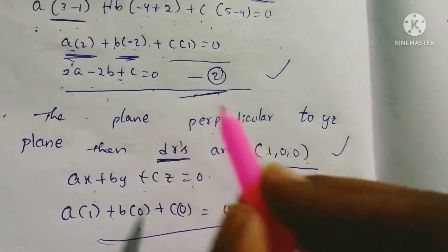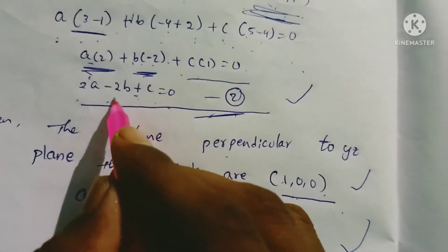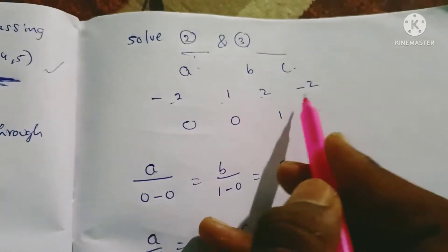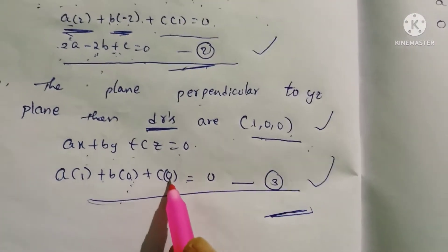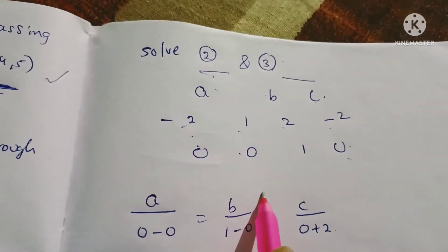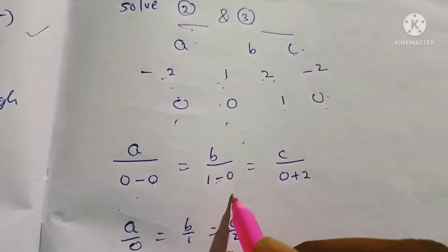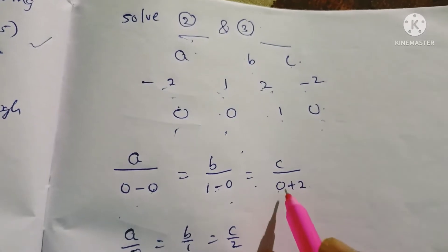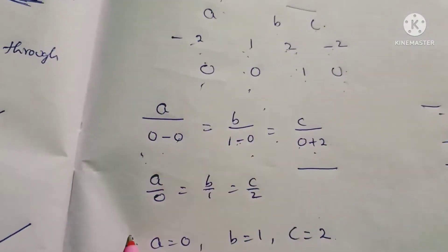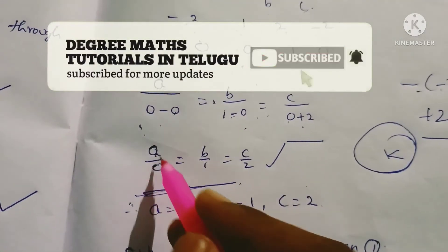Solving the equations, the coefficients give us: a/0 = b/1 = c/2. Taking the constant k with the same values, A = 0, B = 1, C = 2.